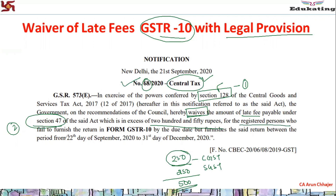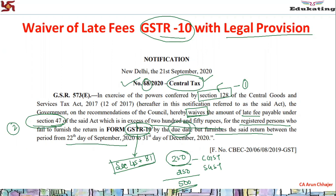This waiver is for registered persons who failed to furnish the return in Form GSTR 10 by the due date. GSTR 10 is a return under Section 45 read with Rule 81. The window is from 22nd September 2020 till 31st December 2020. So if you file your GSTR 10 by 31st December 2020, the late fee, which was previously up to ₹10,000 (at ₹200 per day), will now be capped at a maximum of ₹500.